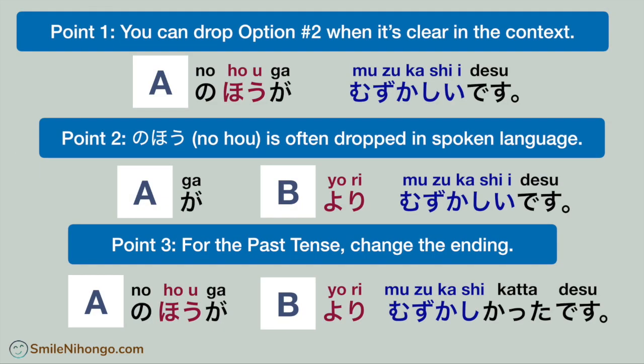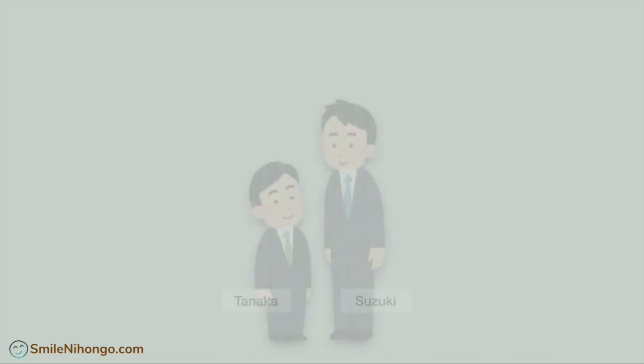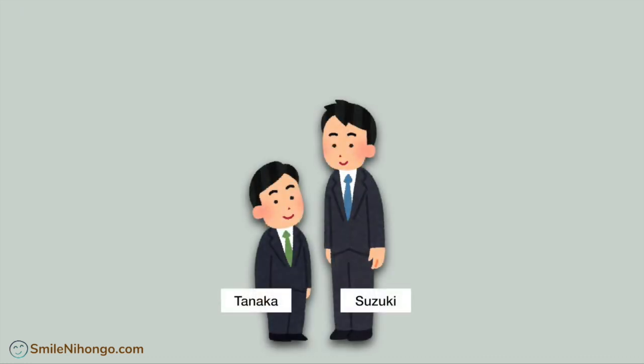So here is the summary of the three points you need to keep in mind when comparing two options in Japanese. OK, let's practice what we have learned so far.